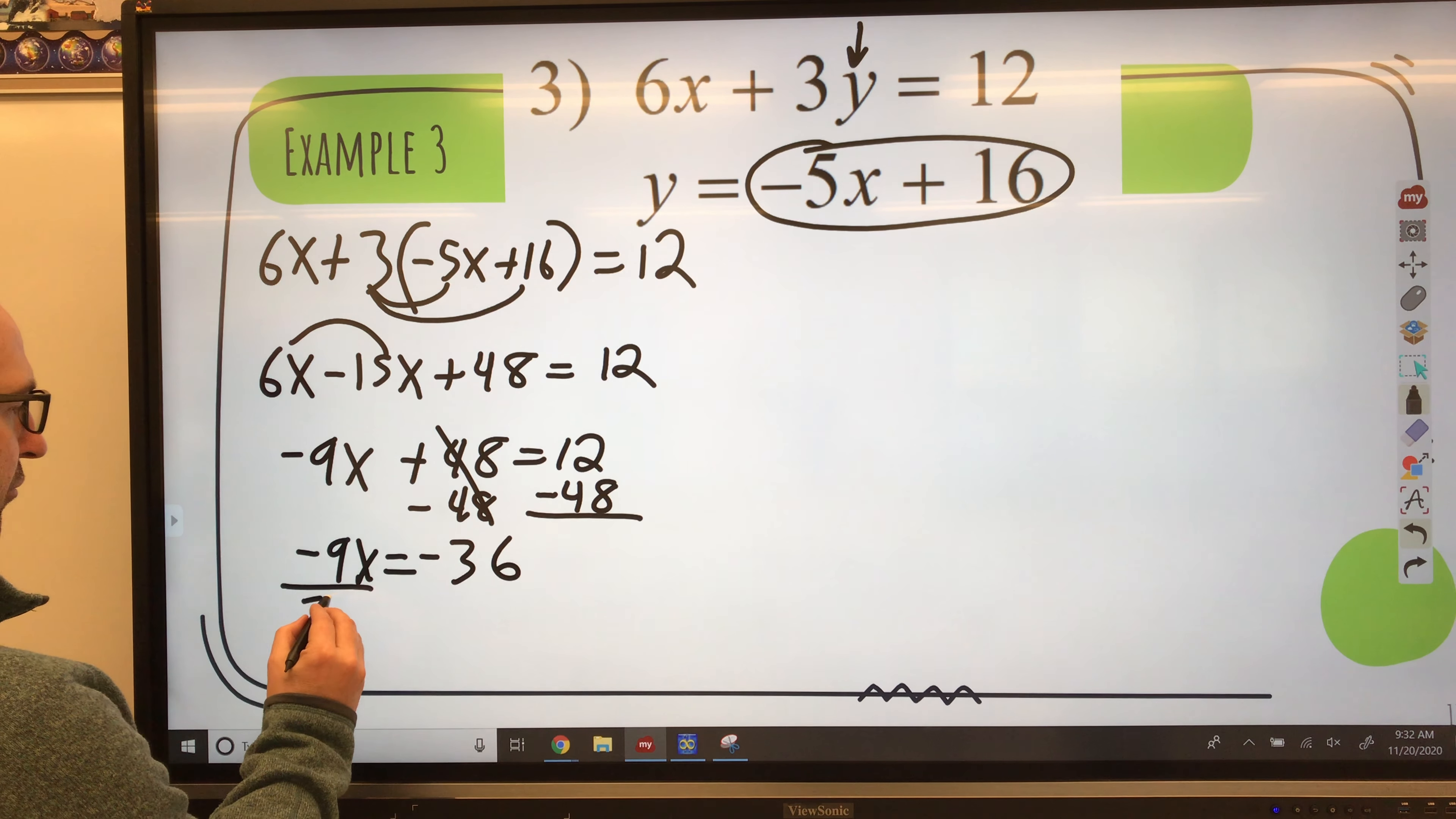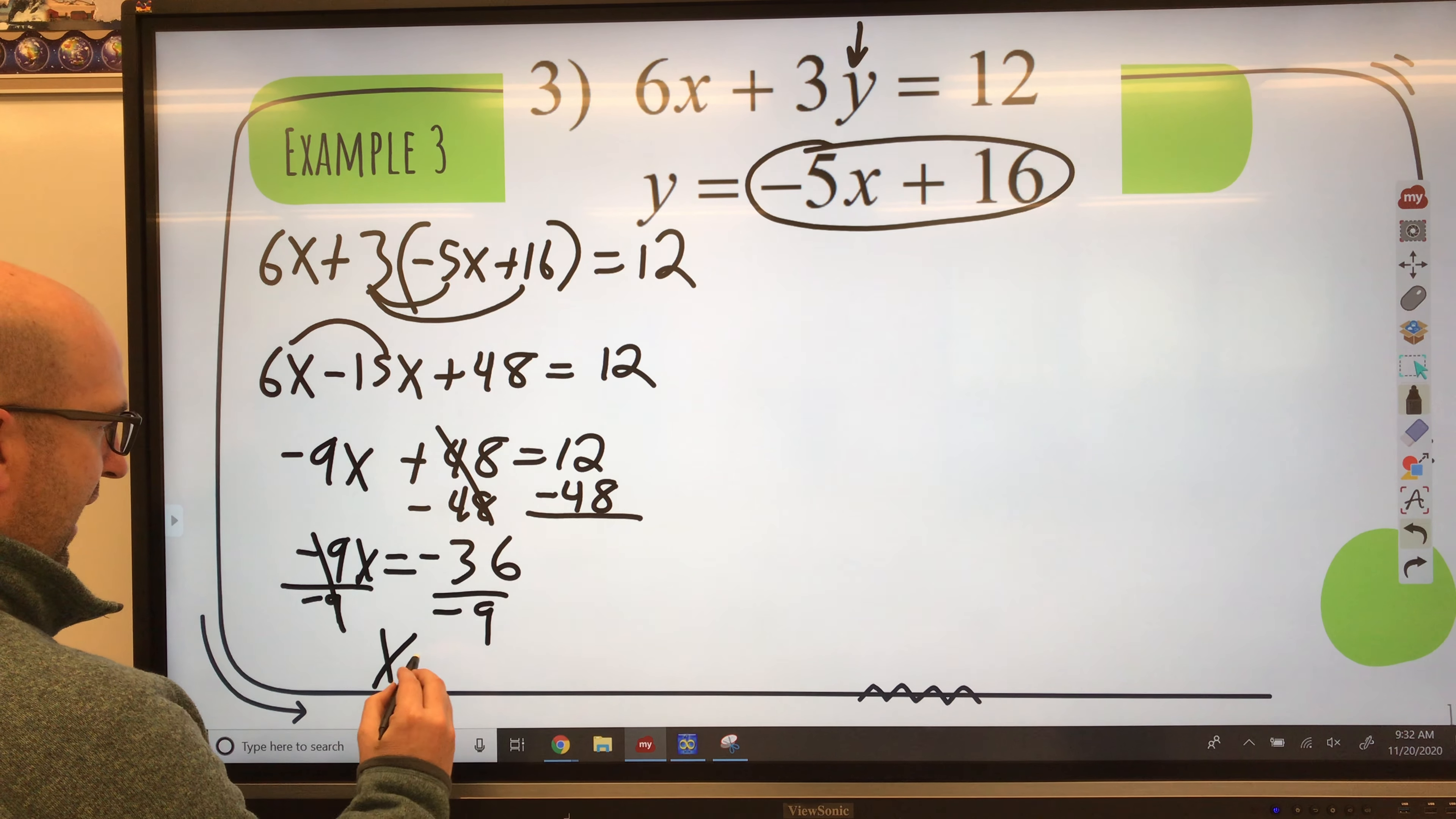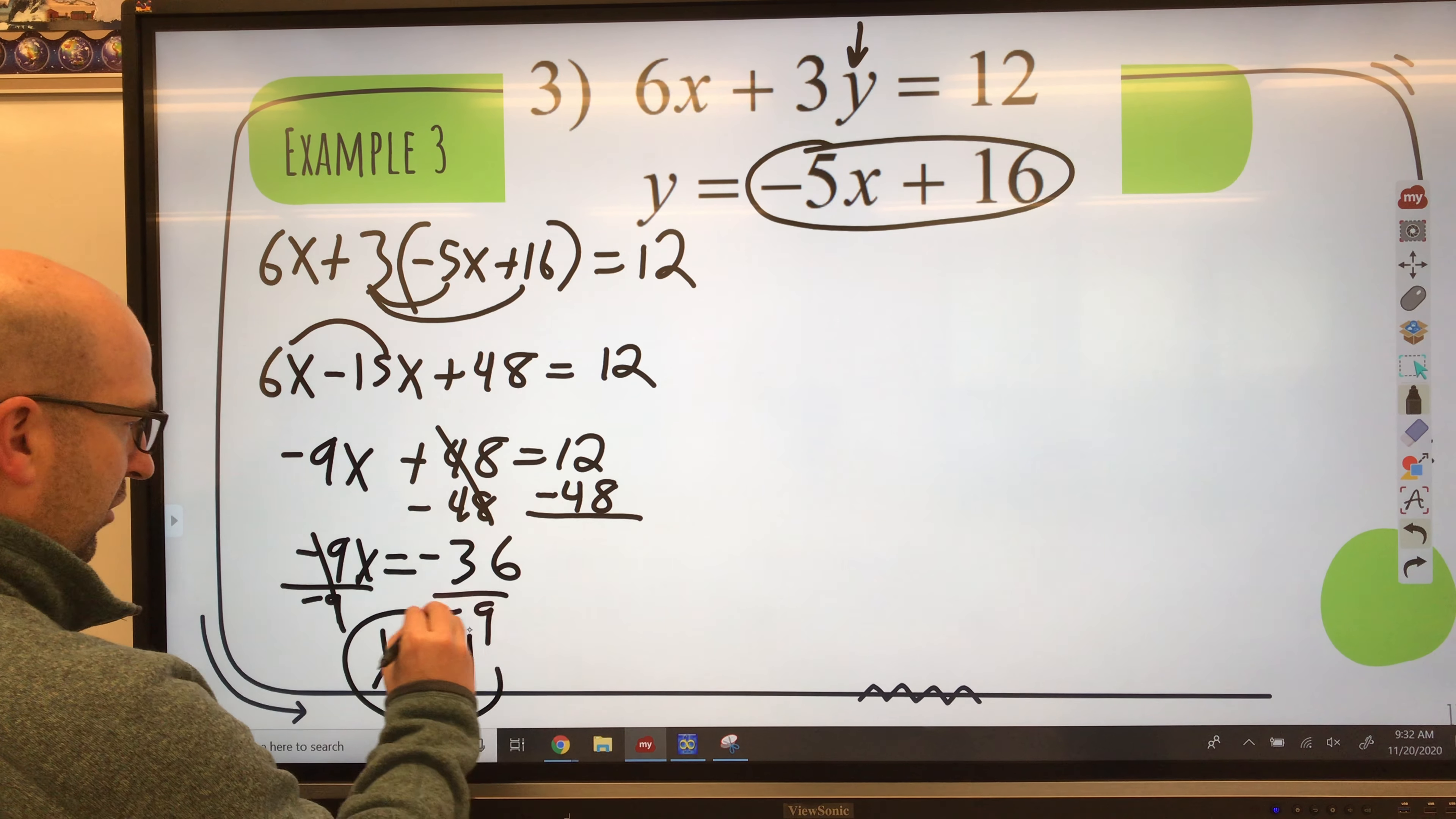12 minus 48 gives me a negative 36. Divide by the coefficient in front of x. And x is going to give me negative 36 divided by negative 9. Positive 4.